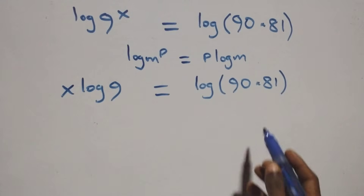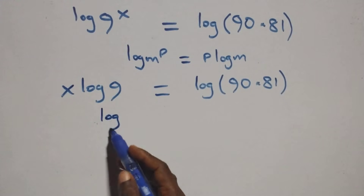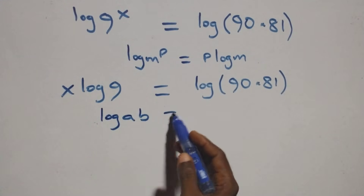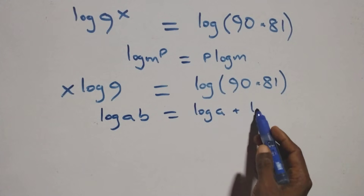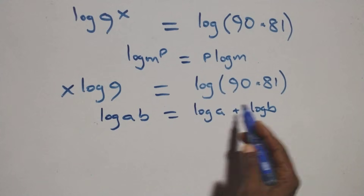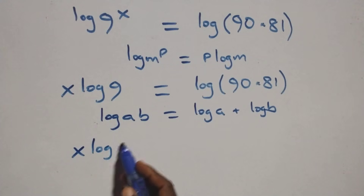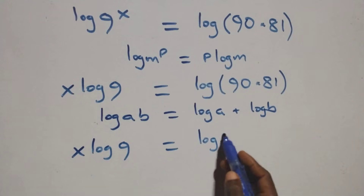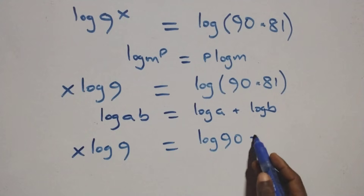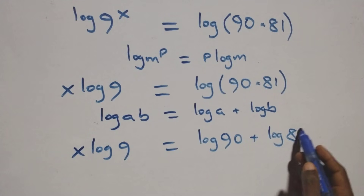This follows the law of logarithms: log(a times b) is the same thing as log a plus log b. So we write x log nine equals log ninety plus log eighty-one.